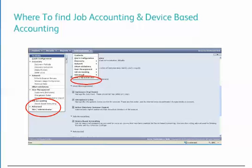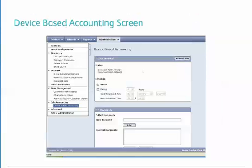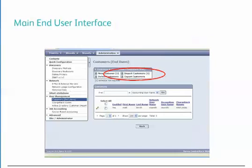The device-based accounting configuration page can be accessed from the administration section of CenterWare Web using the left-hand menu, drop-down menu, or main page. Under the job accounting selection, select device-based accounting to configure when to retrieve job data from the devices. On this page, you can also enter the email address that will receive notification when job data cannot be imported. Under user management on the administration tab, you can configure accounting users, manually add users, or import from a CSV file. CenterWare Web also allows users to import directly from Active Directory, which we will be talking about later.